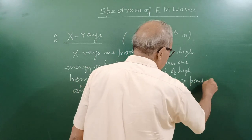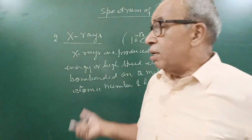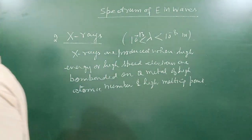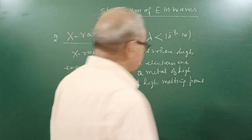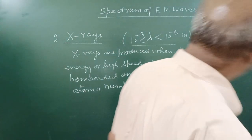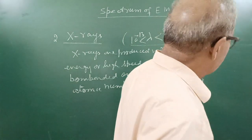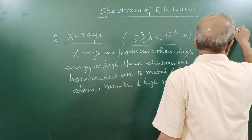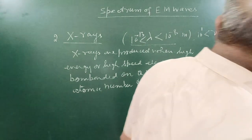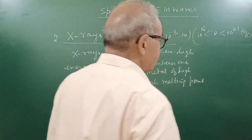When high energy electrons are incident, most of the energy will turn to heat radiation and small amount to X-rays. So if melting point of metal is low, the metal can be melting. Frequency range is 10 to the power 21 to 10 to the power 16 hertz. What is the use of X-rays?